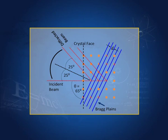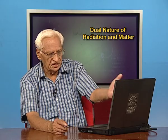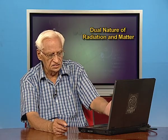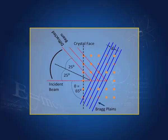The spacing of the Bragg planes is d, which is roughly 1 × 10⁻¹⁰ meters. So everything is now known — this angle is known, the spacing of the Bragg planes is known — and we can calculate the wavelength of the electron.